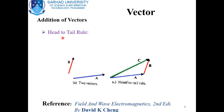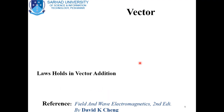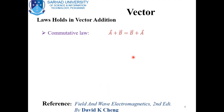Another rule of vector addition is the head to tail rule. Again we have two vectors to add. According to this rule, we coincide the head of one vector with the tail of the other vector. If we are doing A plus B, the head of vector A is coincided with the tail of vector B. The resultant is drawn so that its tail coincides with the tail of the first vector and its head coincides with the head of the last vector.